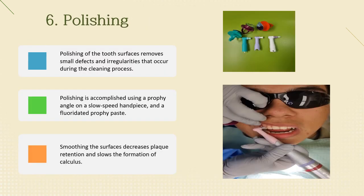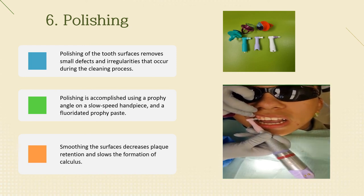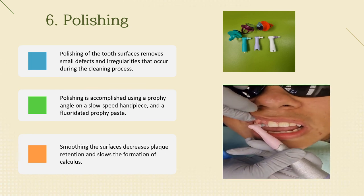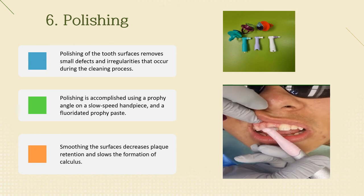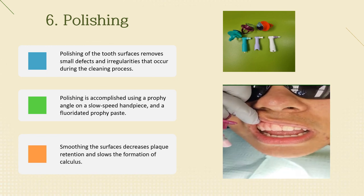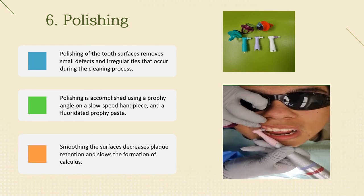Contents 6: polishing. Polishing of the tooth surfaces removes small defects and irregularities that occur during the cleaning process. Polishing is accomplished using a prophy angle on a slow-speed handpiece and a prophy paste. Smoothing the surfaces decreases stain retention, aids maintenance, and slows the formation of calculus.